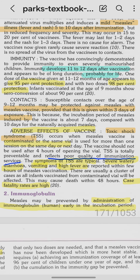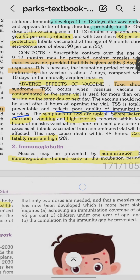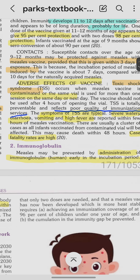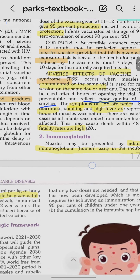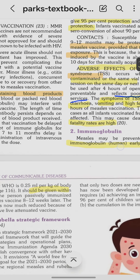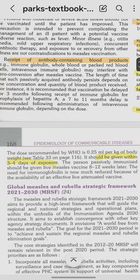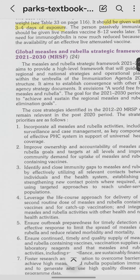Measles immunoglobulin can prevent measles if given within three to four days of exposure.